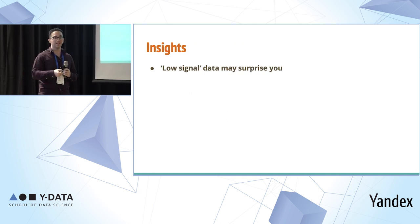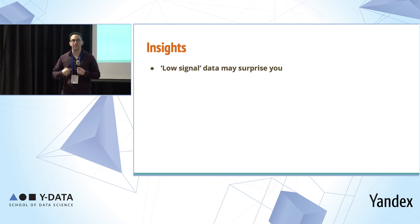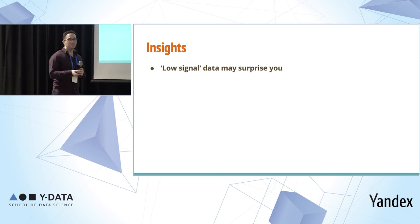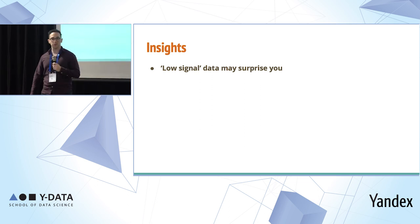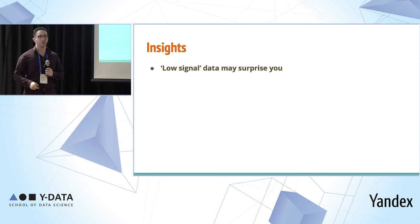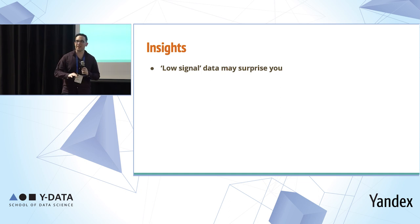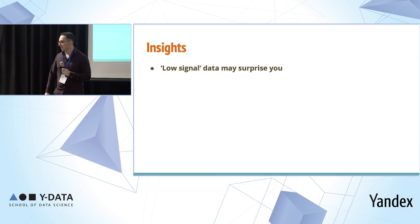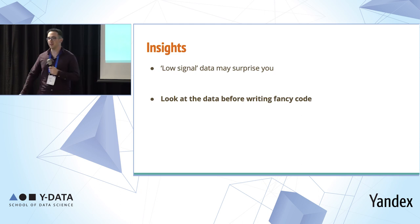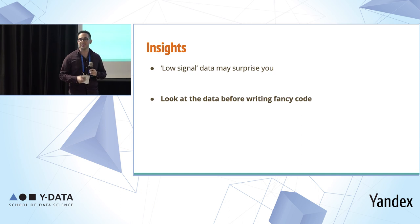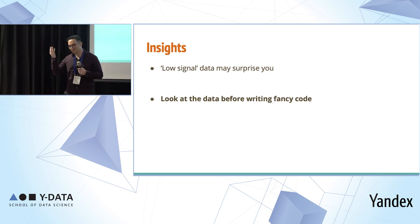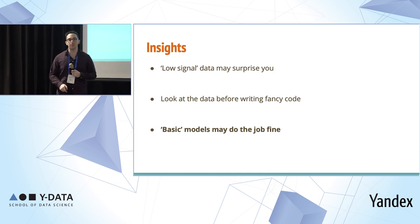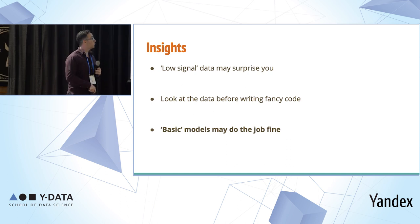Some insights Andre and I took from this project. First, low signal data is surprising — sometimes we were very pessimistic about what we could do, but in the end the performance was fine. Don't be too pessimistic. Second, don't solve fancy use cases until you look at the data and confirm you actually have them. Third, basic models — not neural nets or anything sophisticated — may do the job just fine. Don't forget to try those first in every project.